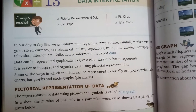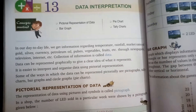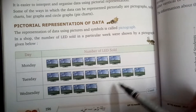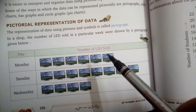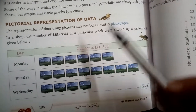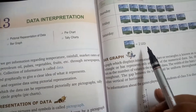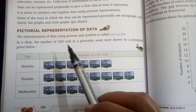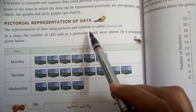It will be helpful to interpret and organize the data using pictorial representation. The representation of data using pictures and symbols is called a pictograph. With this diagram we can understand — for example, on Monday these many LEDs were sold, on Tuesday these many, and on Wednesday these many. Here, one picture of an LED is equal to two LEDs. So with the help of this we understand the data clearly.